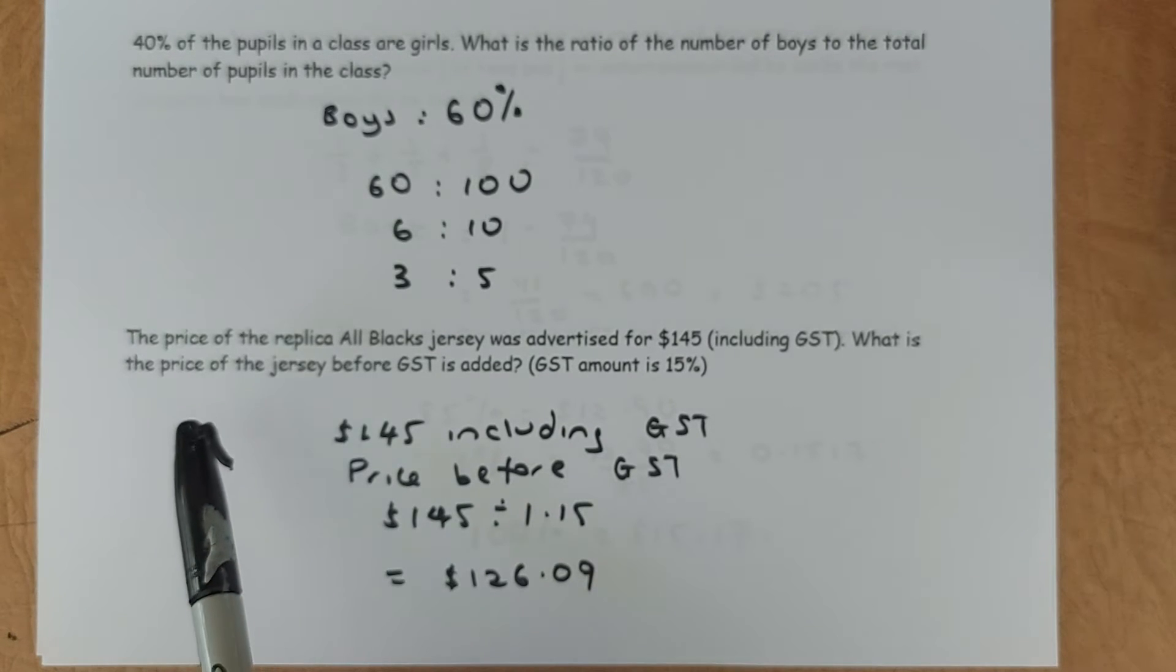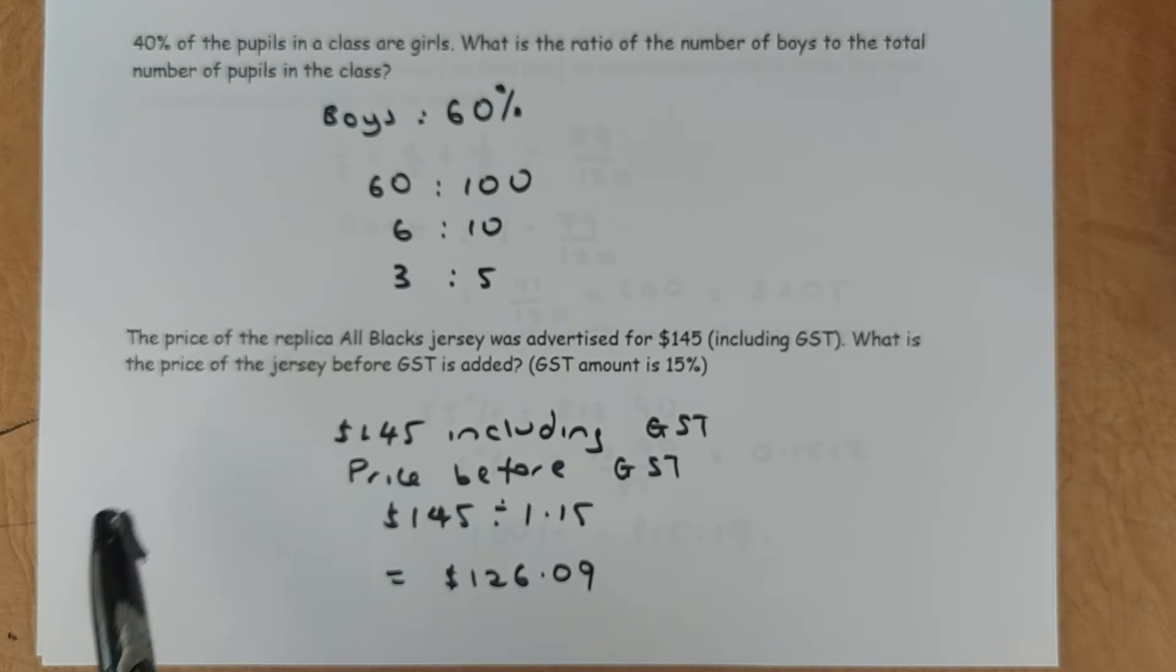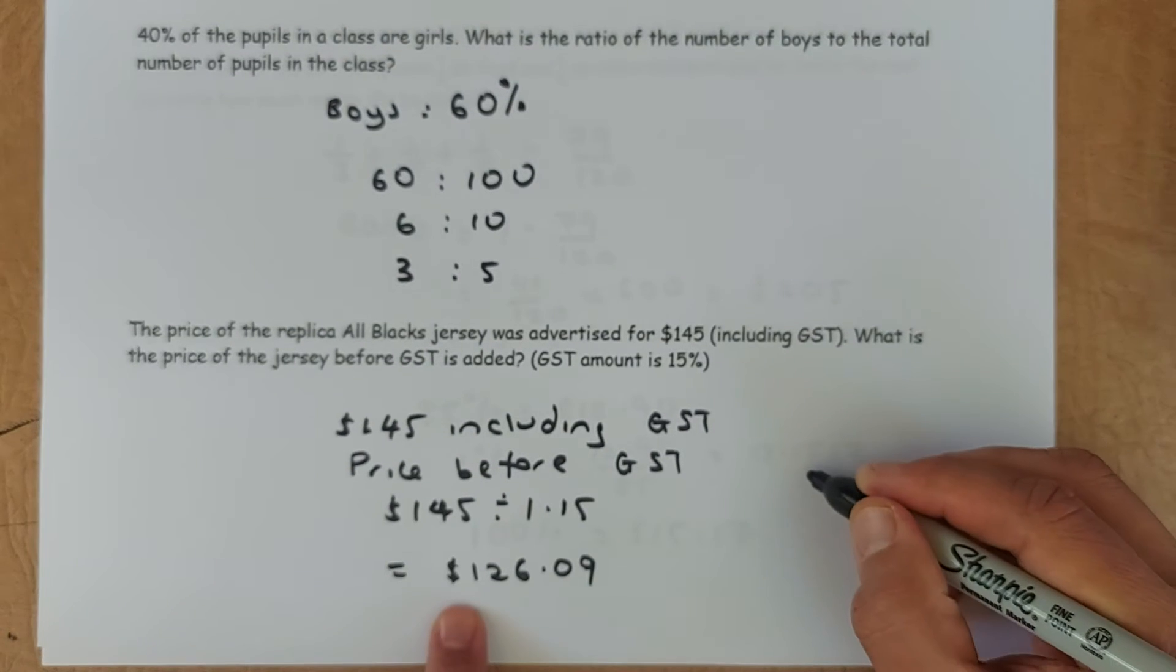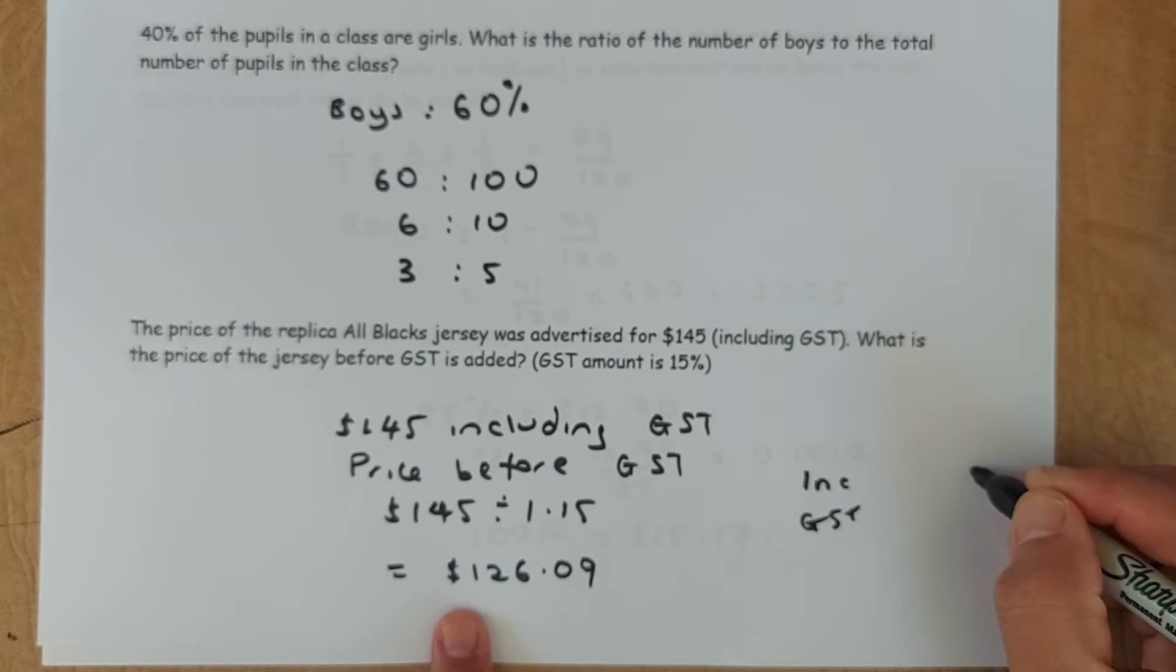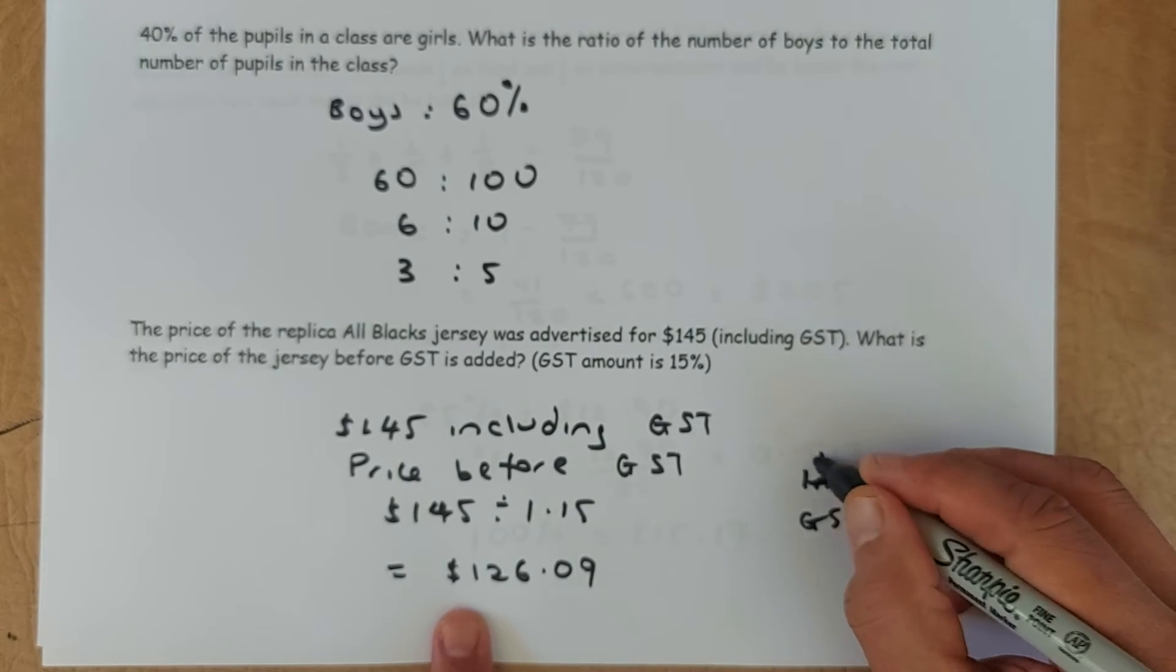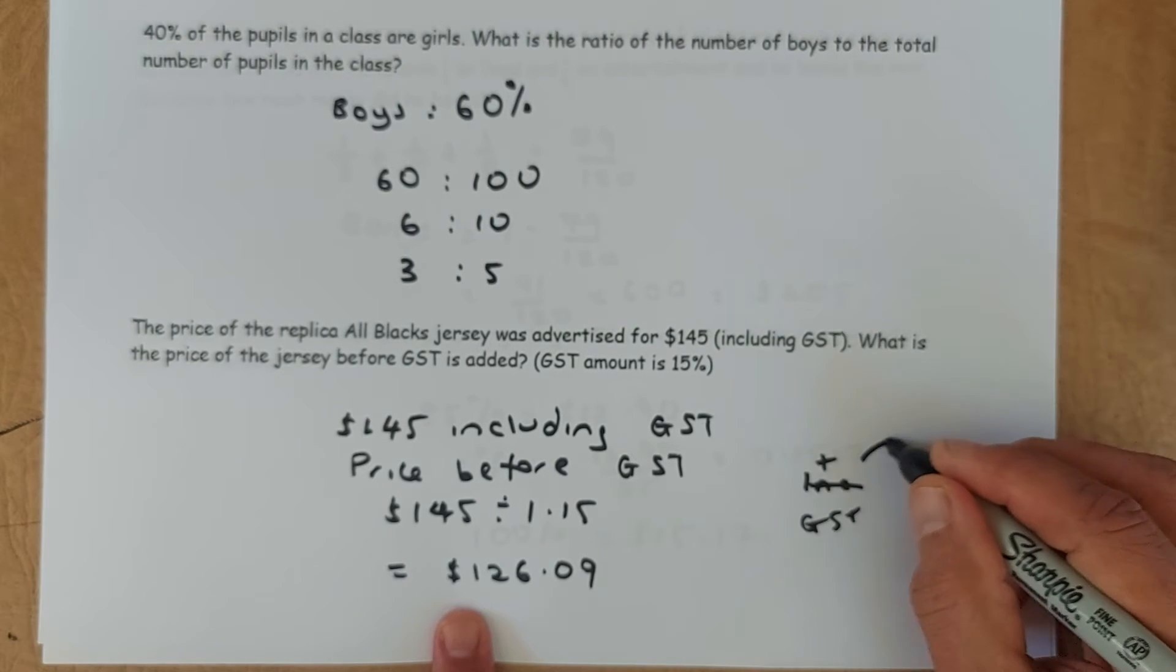Now the next question. The price of a replica all black jersey was advertised as $145 including GST. What is the price of the jersey before GST? So if you look at my previous video, it is include GST, include GST. And sorry, this is plus GST and include GST.